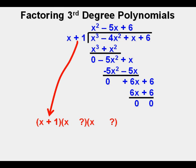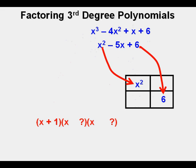Which means that x plus 1 is one of the binomial factors of x cubed minus 4x squared plus x plus 6 and that we still have to factor the remaining trinomial x squared minus 5x plus 6 to factor x cubed minus 4x squared plus x plus 6 completely.